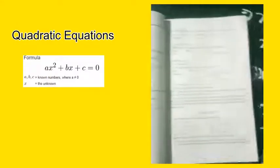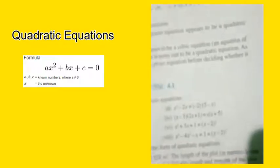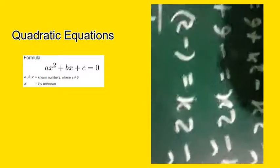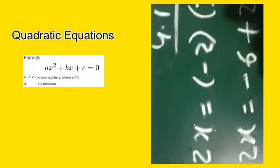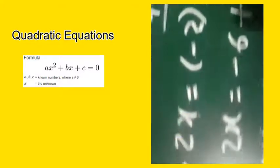Dear students, now I will explain some remaining questions of exercise 4.1. Let's check question number 2: is x squared minus 2x equal to minus 2 into (3 minus x) a quadratic equation or not? Check whether it is a quadratic equation or not. This question is written as x squared minus 2x equals minus 2 into (3 minus x).